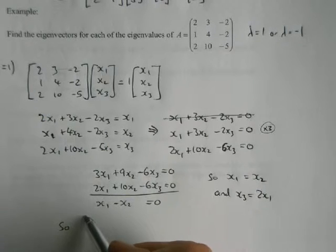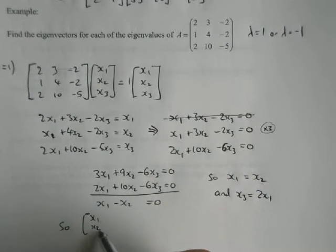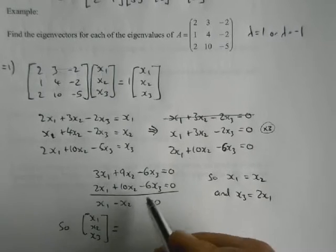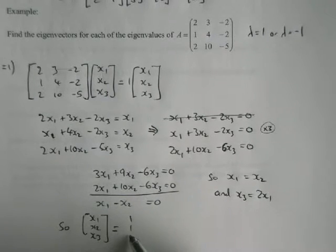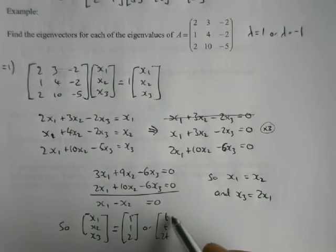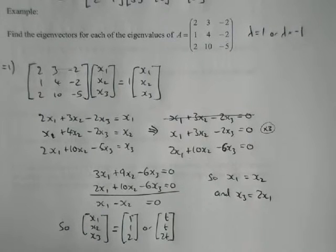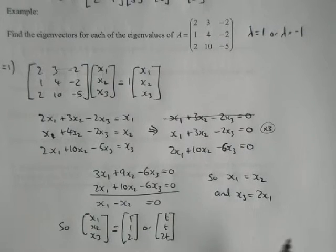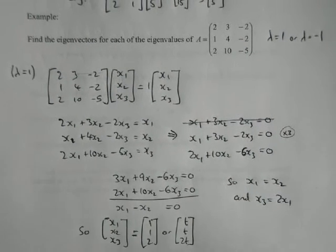So my eigenvector is equal to the primary one will be 1, 1, 2, or anything of the form t, t, 2t. So any vector at all, which the first two elements are the same and the third one is doubled, will be an eigenvector that works when the eigenvalue is equal to 1.